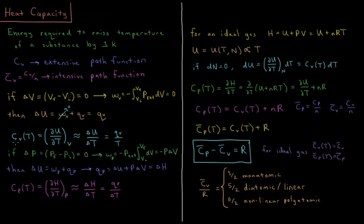If Cv is approximately delta U over delta T, and we saw that delta U equals the constant volume heat, then the constant volume heat capacity is approximately the heat divided by the change in temperature of the system.